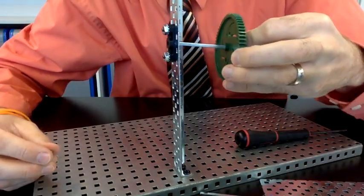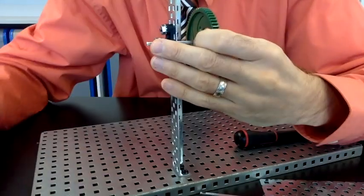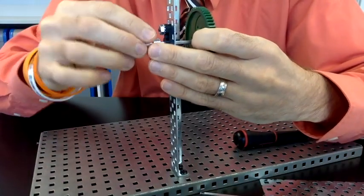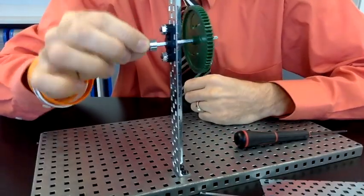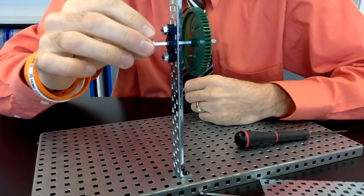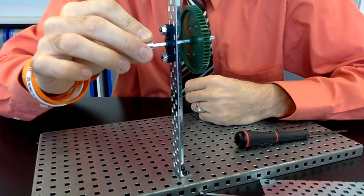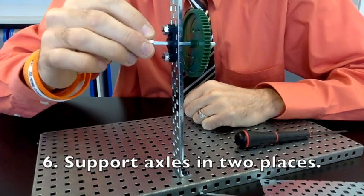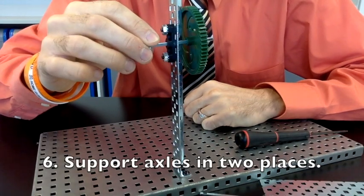If an axle is only supported in one spot like this, it is going to pivot. That means your gears will not stay in good contact. You need to support an axle in two spots to reduce that rotation and keep the gears in good contact.